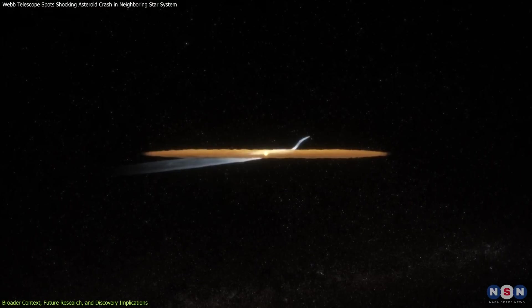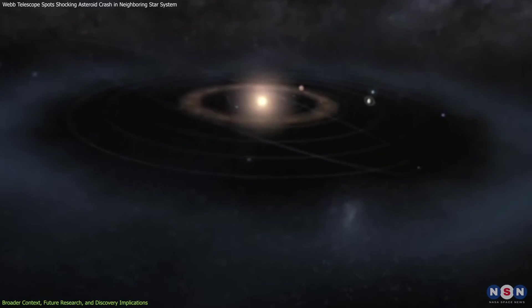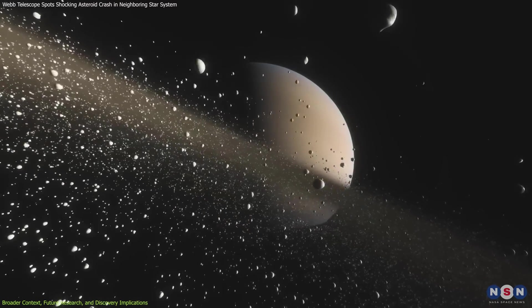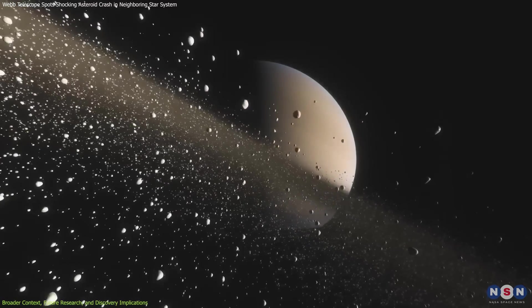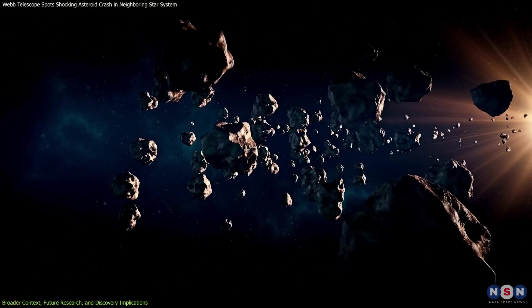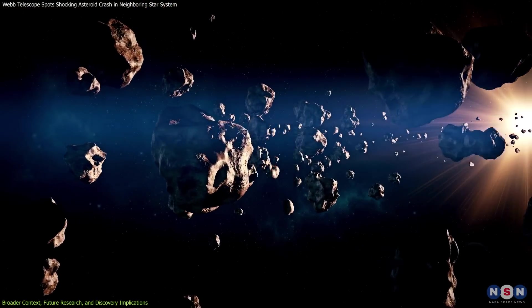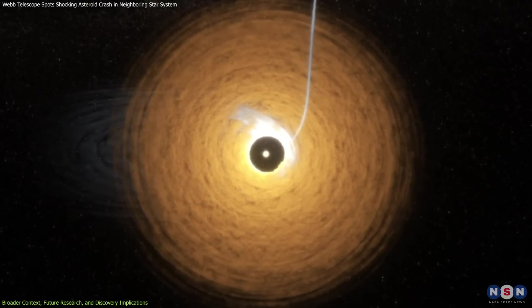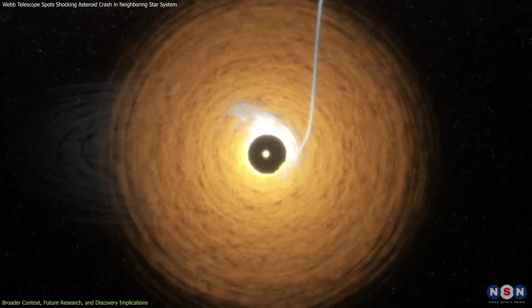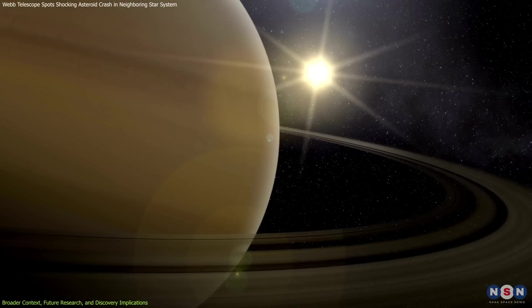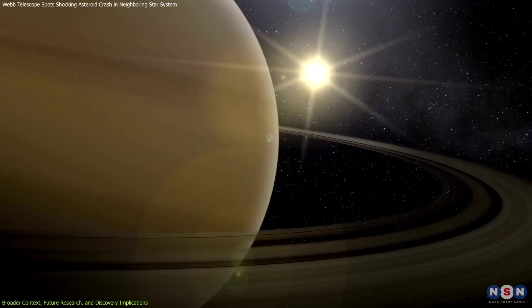Beta Pictoris itself is known for its prominent debris disk, which, similar to the Kuiper Belt in our solar system, contains rock and ice fragments. This contrasts with Saturn's rings, primarily composed of ice particles, providing a fascinating comparison of how different celestial bodies' rings and disks form and evolve. The Beta Pictoris disk exhibits complex structures like warps and clumps, influenced by planetary gravitational effects, while Saturn's rings show gaps and waves shaped by interactions with its moons.